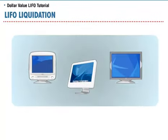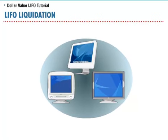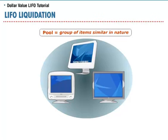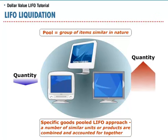To alleviate this LIFO liquidation problem and to simplify accounting for inventory, goods can be combined into pools. A pool is defined as a group of items of a similar nature. Instead of only identical units, as is used with specific identification LIFO, a number of similar units or products are combined and accounted for together. This method is referred to as the specific goods pooled LIFO approach. Under this approach, LIFO liquidations are less likely to happen because the reduction of one quantity in the pool may be offset by an increase in another.